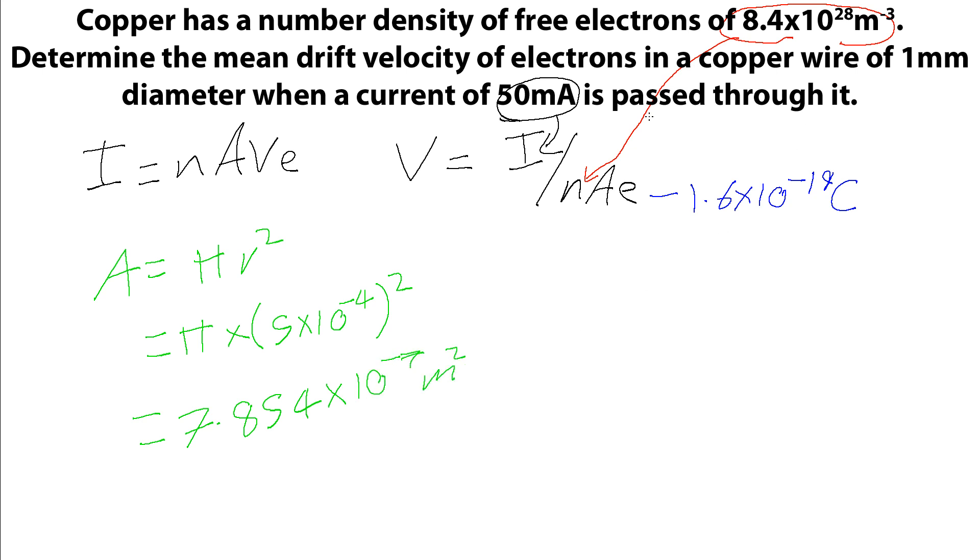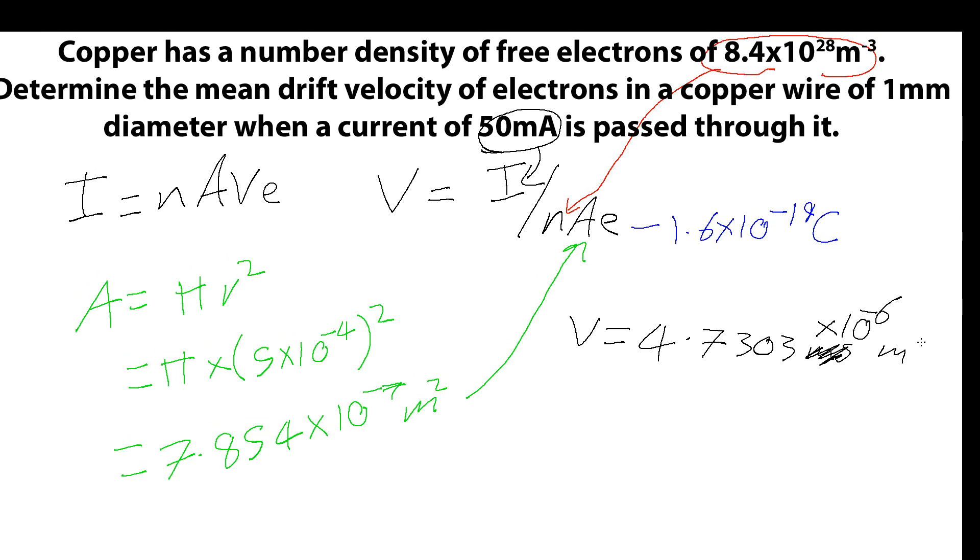Now we can stick this value up into this area. And we simply have to now punch this into our calculator. And what we get is a value for the drift velocity is 4.7303 times 10 to the minus 6 meters per second.